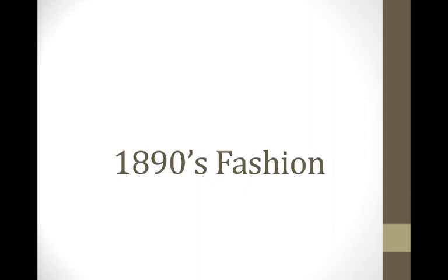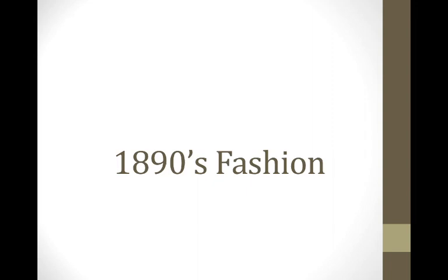We're going to really see that throughout fashion history, so be looking for some trends that repeat every 20 to 30 years. So 1890s fashion — this is known as the Victorian era, named after Queen Victoria. The era actually ends in 1901, but we're really going to just talk about 1890 to 99, and the reason why it ended was because that was the year that Queen Victoria died.